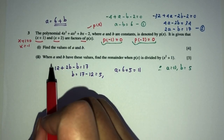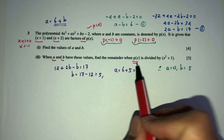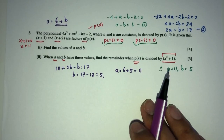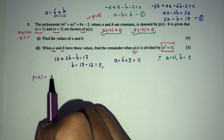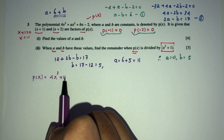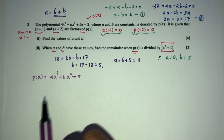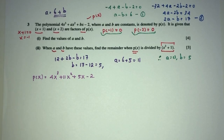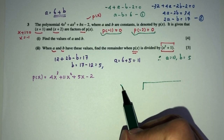Now for part 2, where a and b have these values as we have just seen, find the remainder of P of x when divided by the given expression. So right now we have P of x found to be 4x cubed plus 11x squared plus 5x minus 2. We're trying to find the remainder when this is divided by the given divisor.